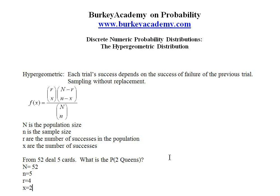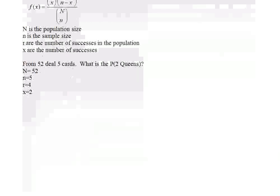But x could be any number that is consistent with how many queens we could get. How many queens could we be dealt? Zero, one, two, three, or four. But not five, because there are only four in the deck. So let's set this problem up and solve it.